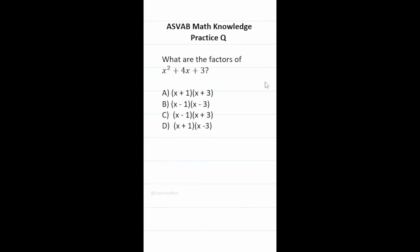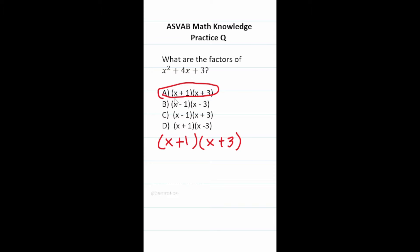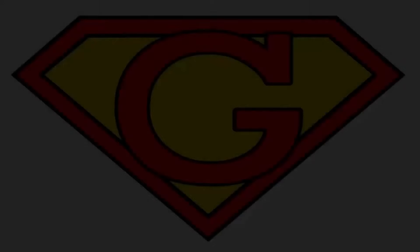This final ASVAB math knowledge practice question says: what are the factors of x squared plus 4x plus 3? This is a quadratic trinomial with a leading coefficient of 1. We need two numbers that multiply to positive 3 and add to positive 4: that's plus 1 and plus 3. So the answer is A: (x plus 1)(x plus 3). If you need help with factoring, check out my channel.